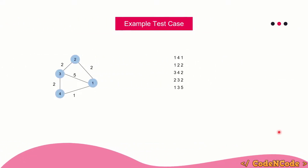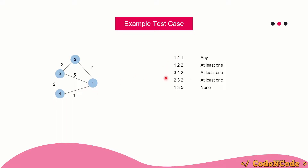Let's understand this with an example. This is the input graph — edges in the form A, B, and W where the third input is the weight. So like one of the edges is 1-4 with weight 1. For each edge you have to tell whether it belongs to none of the MSTs, all of the MSTs, or at least one of the MSTs. This edge will be present in all of the MSTs.